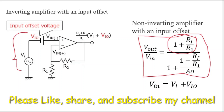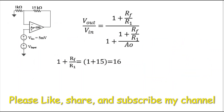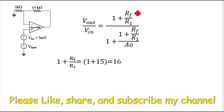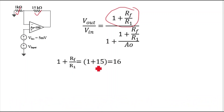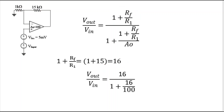This is our circuit. A naught is 100. Since the input is applied at the plus terminal, this is a non-inverting amplifier. First we calculate 1 plus RF by R: RF is 15 kilo ohm and R is 1 kilo ohm, so 1 plus 15 divided by 1 equals 16. We call this K, so K equals 16.